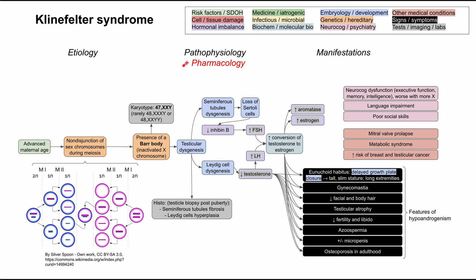Lastly, a quick note on pharmacology: what can you do to treat this? You can combat the hypoandrogenism symptoms by giving more androgens — specifically, lifelong testosterone replacement. That should address many of the symptoms related to low testosterone. That's it for this flowchart of Klinefelter syndrome. I hope it was helpful, and thank you for listening.